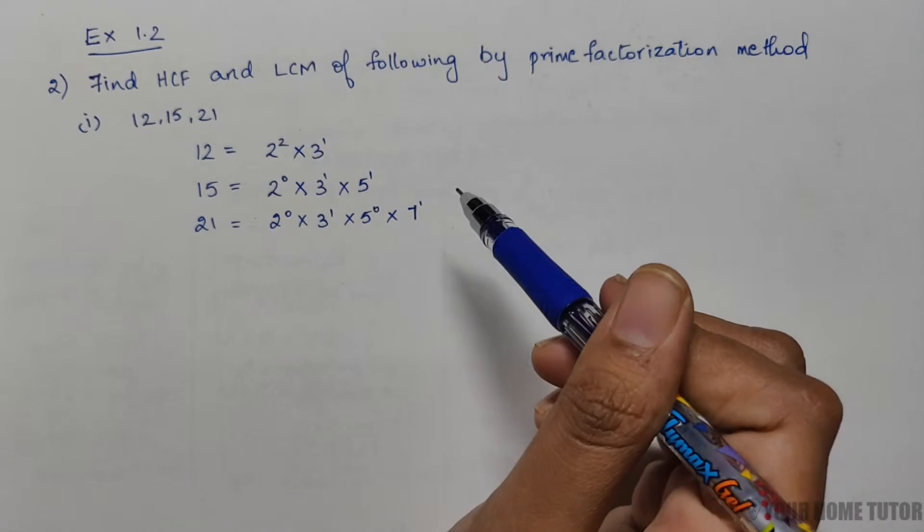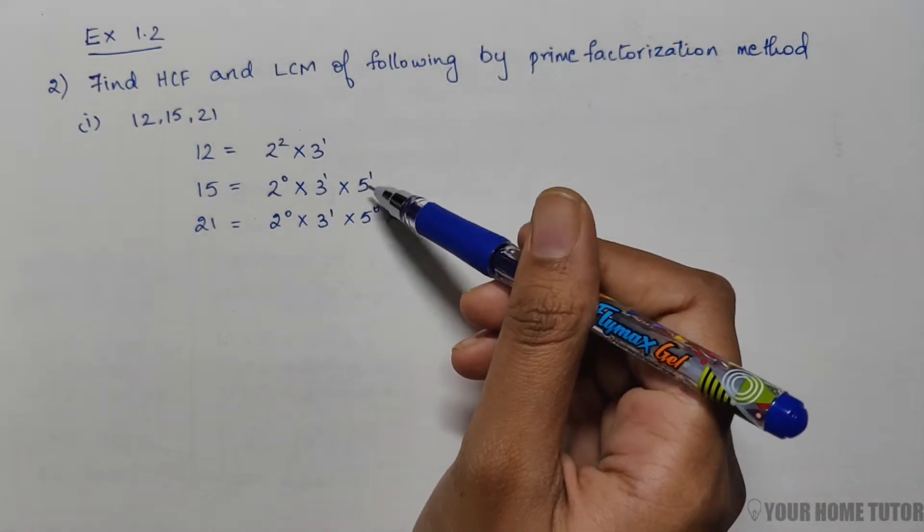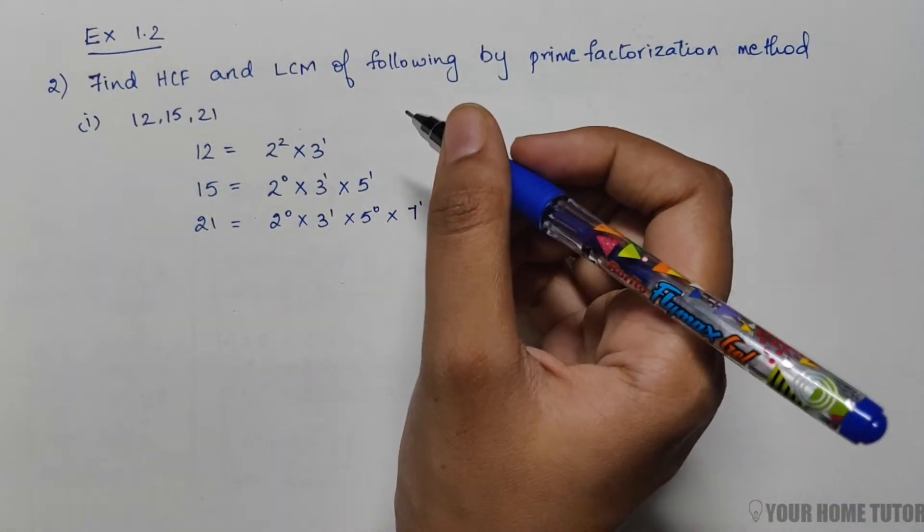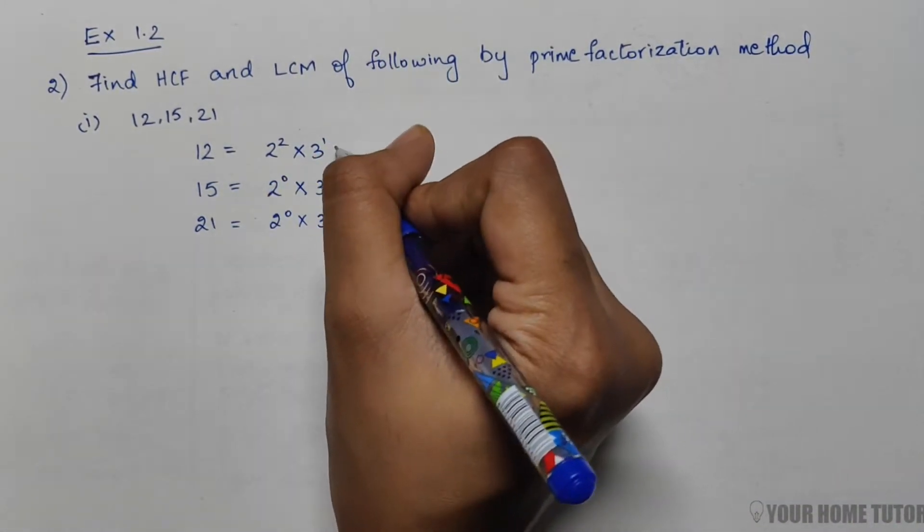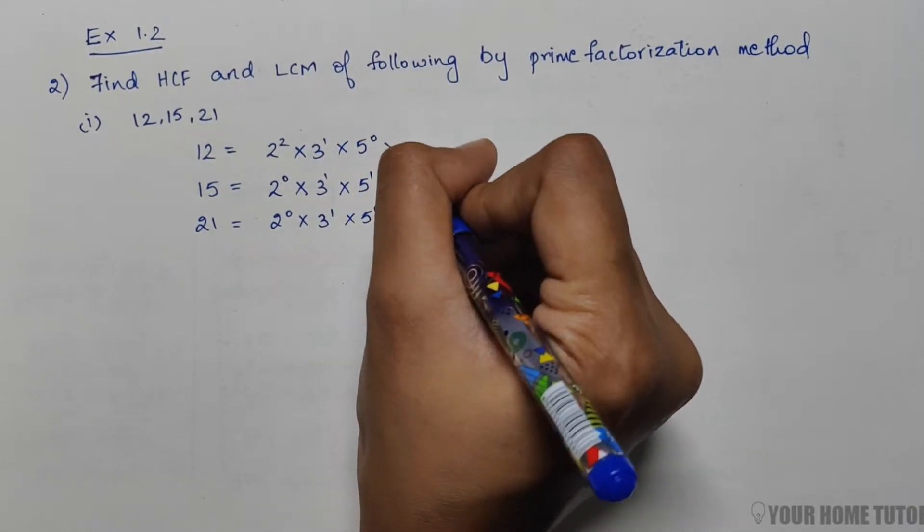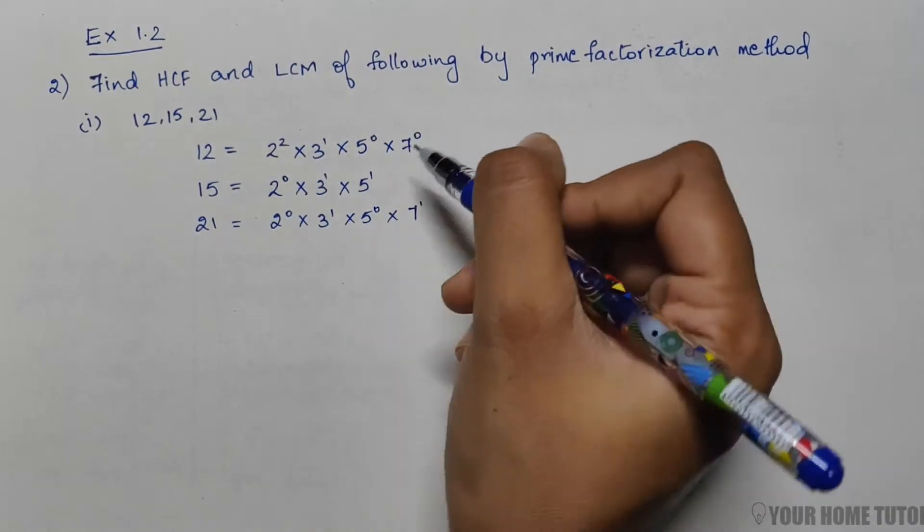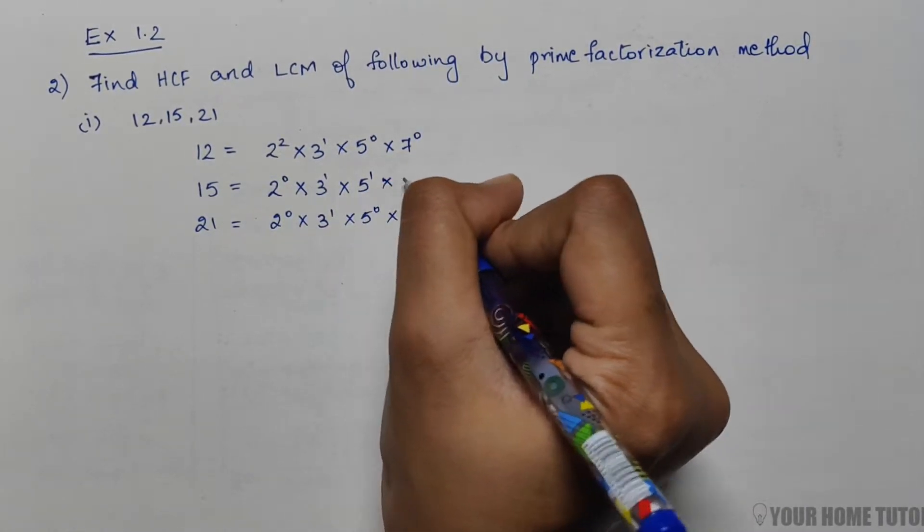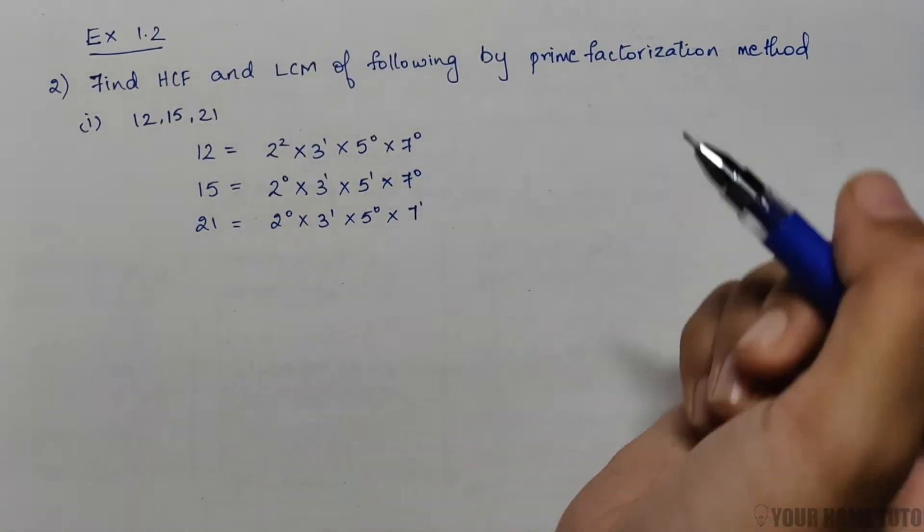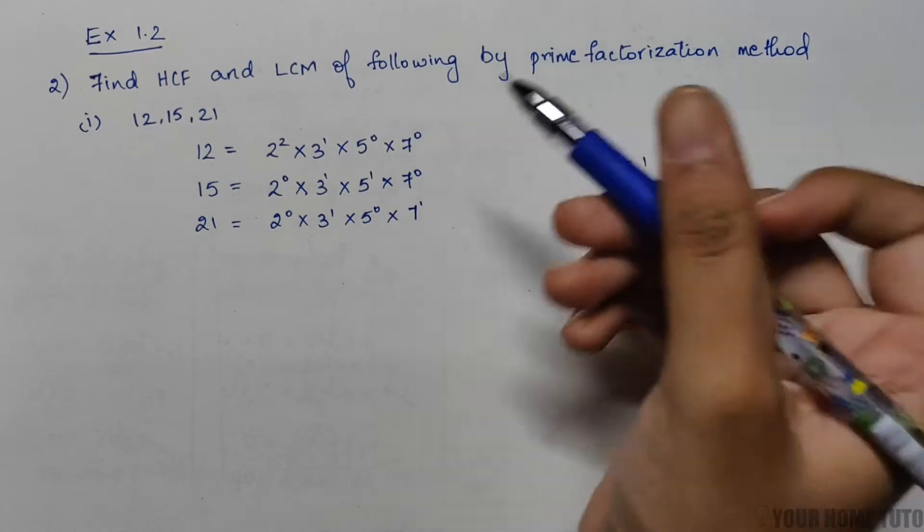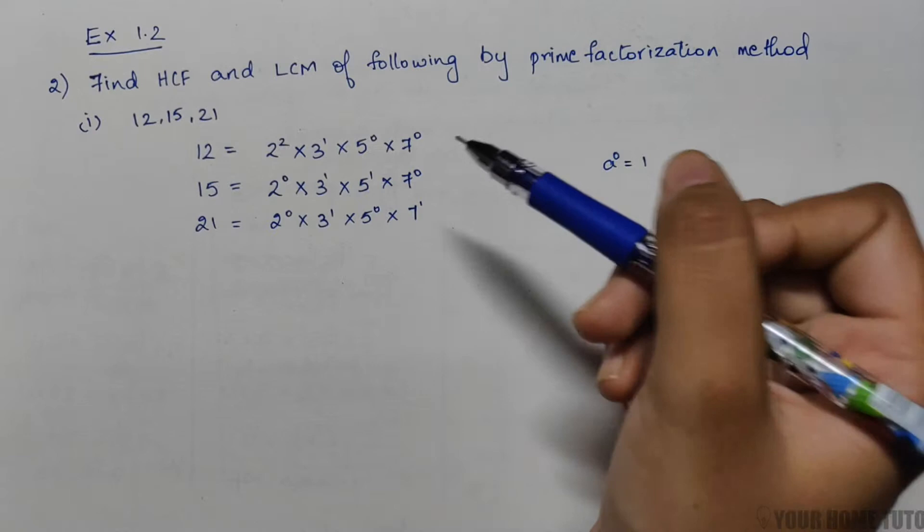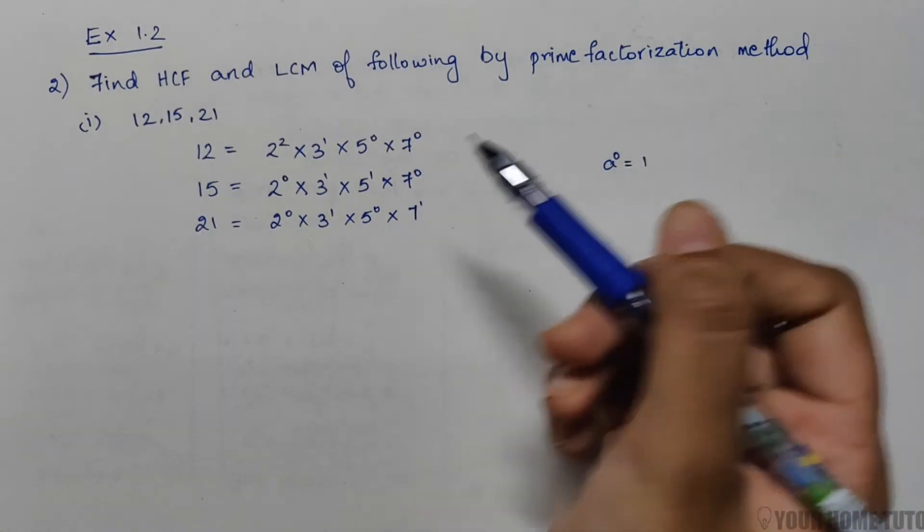Wherever we are not using the prime factors 5, 7, 3, or 2, we simply write it as power 0. For example, in 12 you can see 2² × 3¹, we can write it as 5⁰ × 7⁰. Similarly here I'll multiply by 7⁰. You know that any number to the power of 0 is 1, so even if I write a number raised to the power of 0 it will simply give me 1. You will understand why I have included these numbers also in the product.